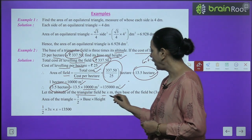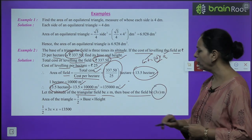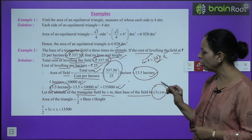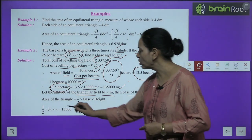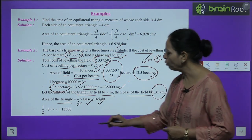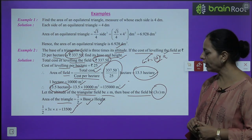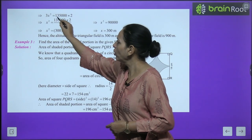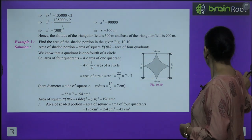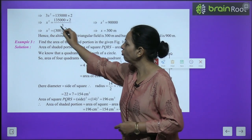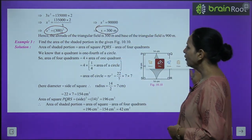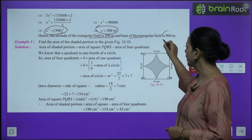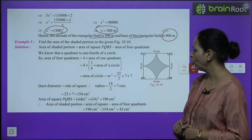Altitude = 300 m and base = 3 × 300 = 900 m.